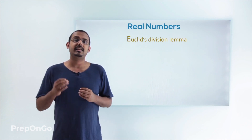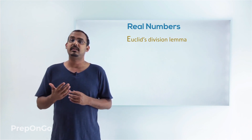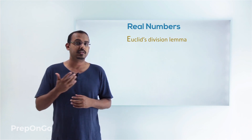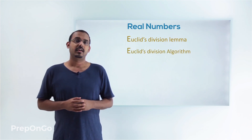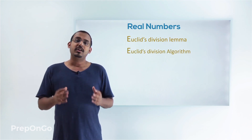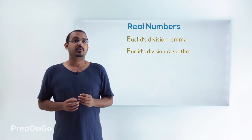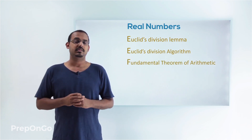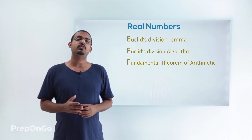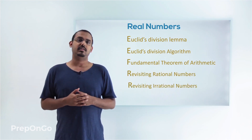We'll be starting with Euclid's division lemma. Once we understand what Euclid's division lemma is and how we use it, we'll go on to study about Euclid's division algorithm. Once we are through with both these concepts, we'll go on and learn about the fundamental theory of numbers. After that, we'll move on to study a little about rational numbers and a little about irrational numbers.